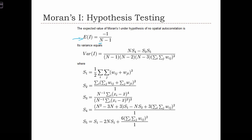But in the case when we don't have infinitely sized samples, so essentially in all cases, we are going to calculate the expected value of Moran's I as just minus 1 over n minus 1, where n is the sample size. So you can see that as n approaches larger and larger numbers, the expected value of I is going to get closer and closer to 0.